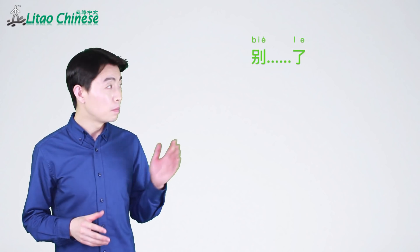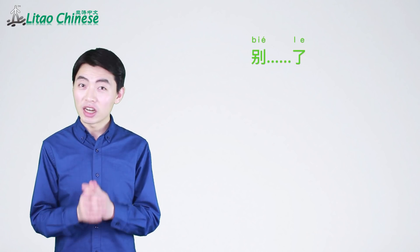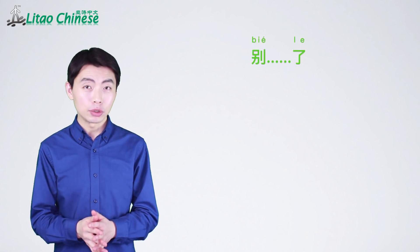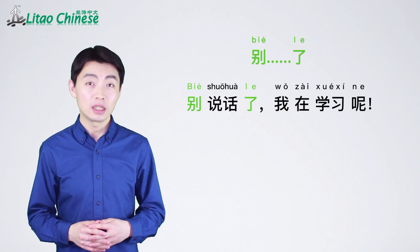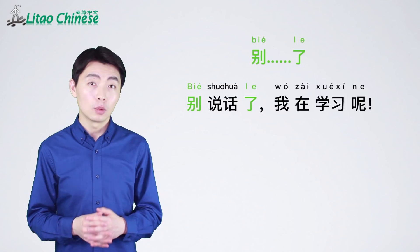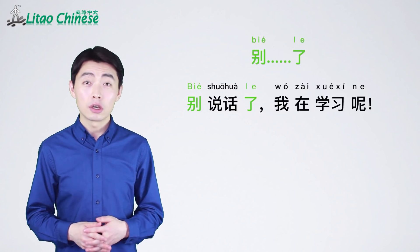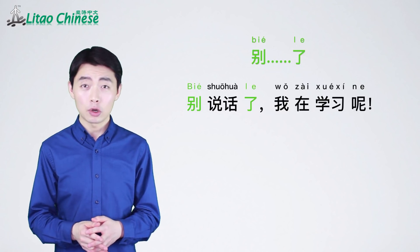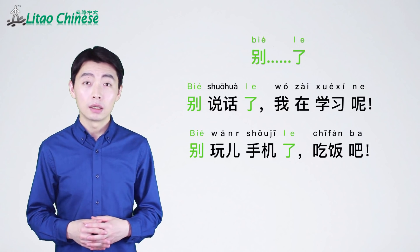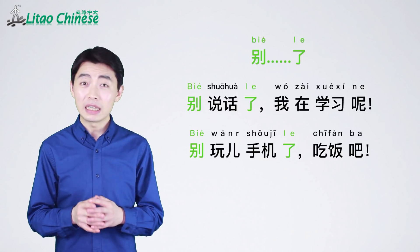We use the pattern 别...了 (bié...le) to tell somebody to stop doing something. For example, if you are studying at a library and people next to you have been talking all the time, you can tell them: 别说话了，我在学习呢 (bié shuō huà le, wǒ zài xué xí ne) — stop talking, I'm studying. Another situation: if you are having dinner with your friend but they keep playing the mobile phone, you can say: 别玩手机了，吃饭吧 (bié wán shǒu jī le, chī fàn ba) — stop playing the mobile phone, eat your meal.